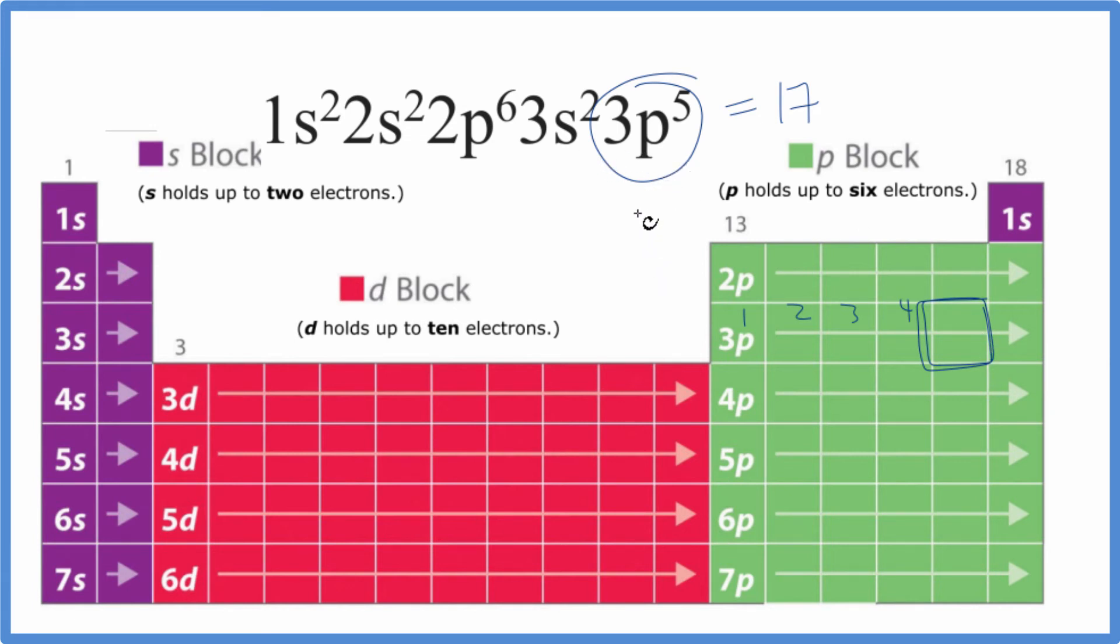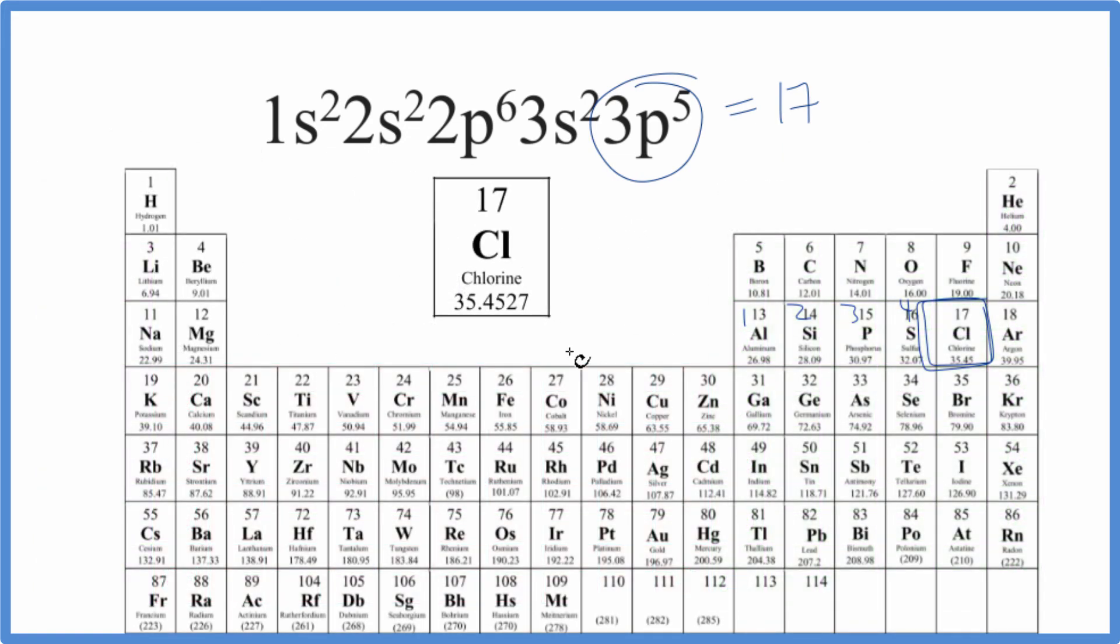Going back to our periodic table with the elements written, and again, we see that we have chlorine. 17 protons, so it has 17 electrons, since these are all neutral.